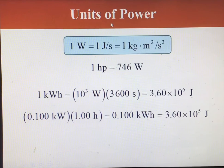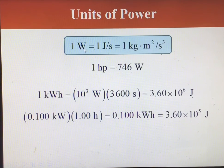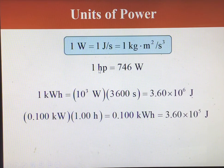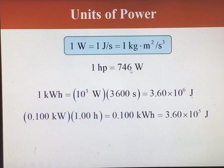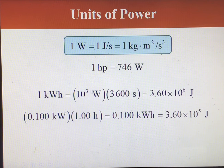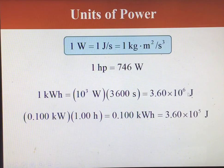Power is given in watts. One watt equals one joule per second, which can also be written as one kilogram meter squared per second cubed. There are other units for power — for example, one horsepower equals 746 watts. There is also a unit called the kilowatt-hour: one kilowatt-hour is the energy equal to 1,000 watts multiplied by one hour (3,600 seconds), which works out to 3.6 × 10⁶ joules.